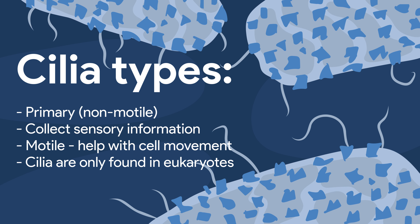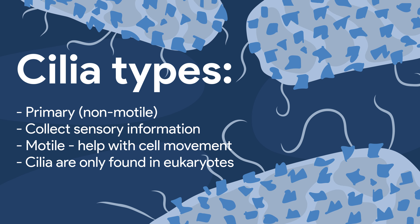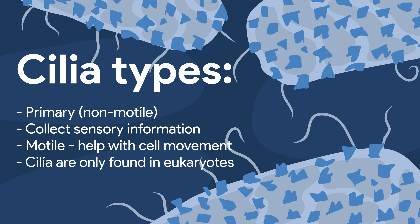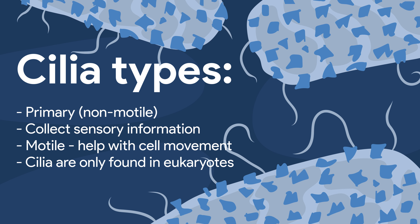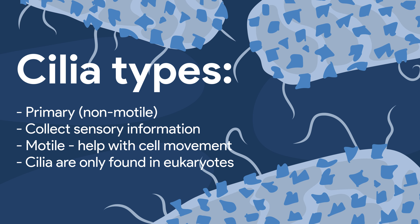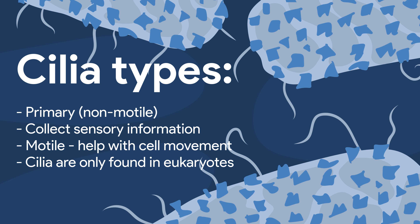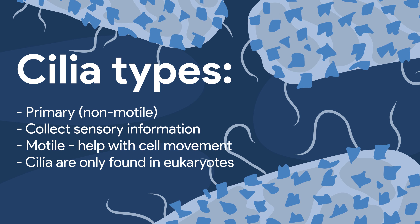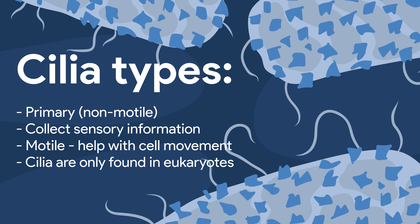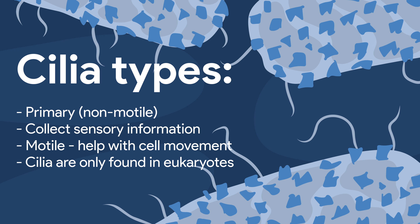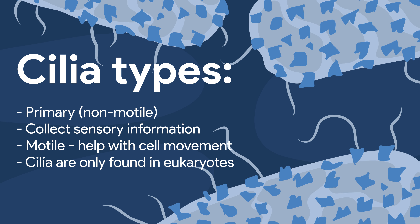Many cells also have cilia. There are two major types of cilia: primary and motile. Cilia are hair-like structures. Primary cilia help collect sensory information, and they're found in most animal cells. Motile cilia are used for movement by making wave-like motions. In complex organisms, cilia can be used to move substances across the cell — as the cilia wave, they move different substances over the cell's surface. In less complex organisms, they have many functions and can help the cell itself to move. There's a special group of protozoans known as ciliates, which use cilia to move very efficiently.